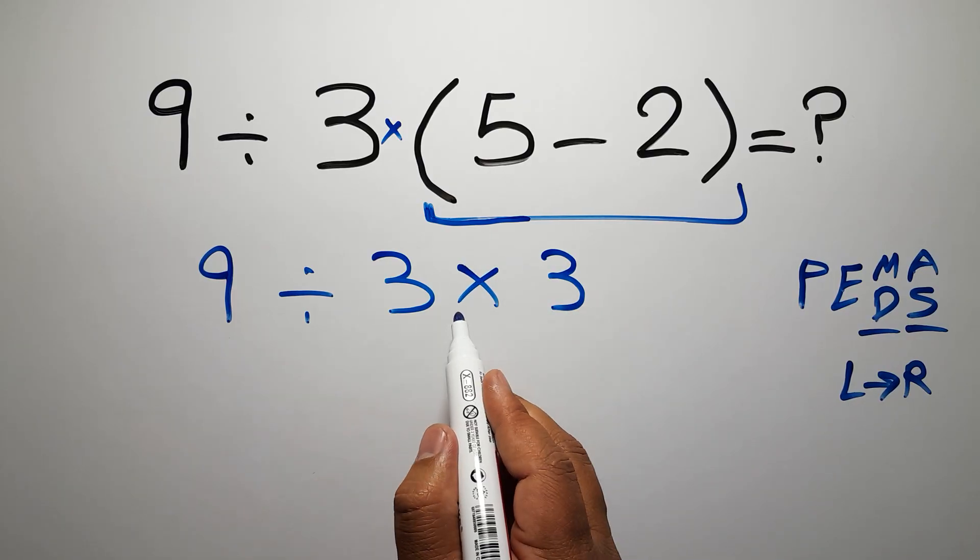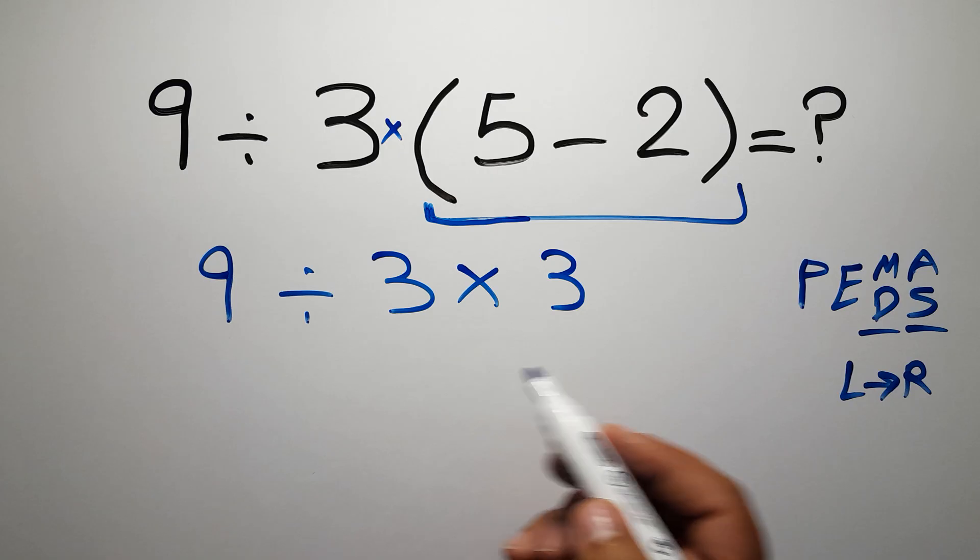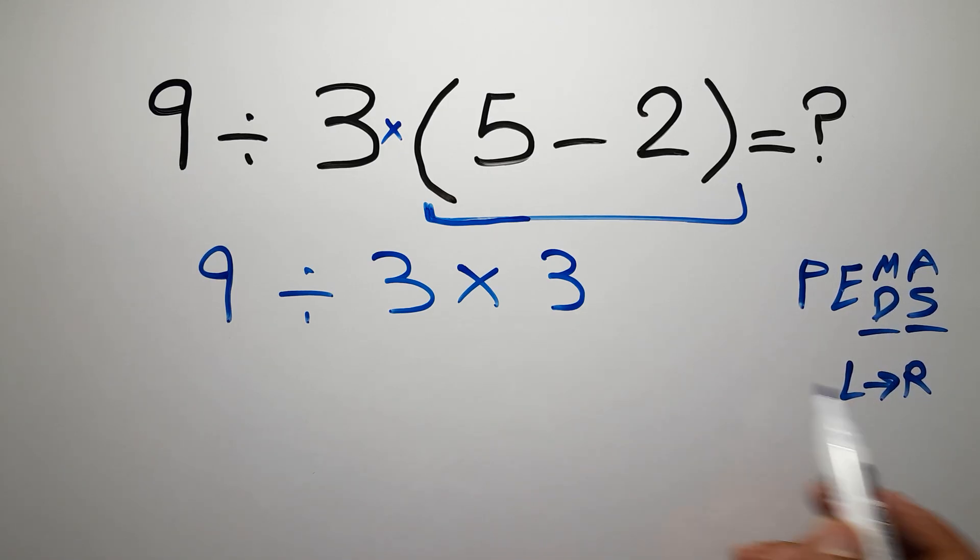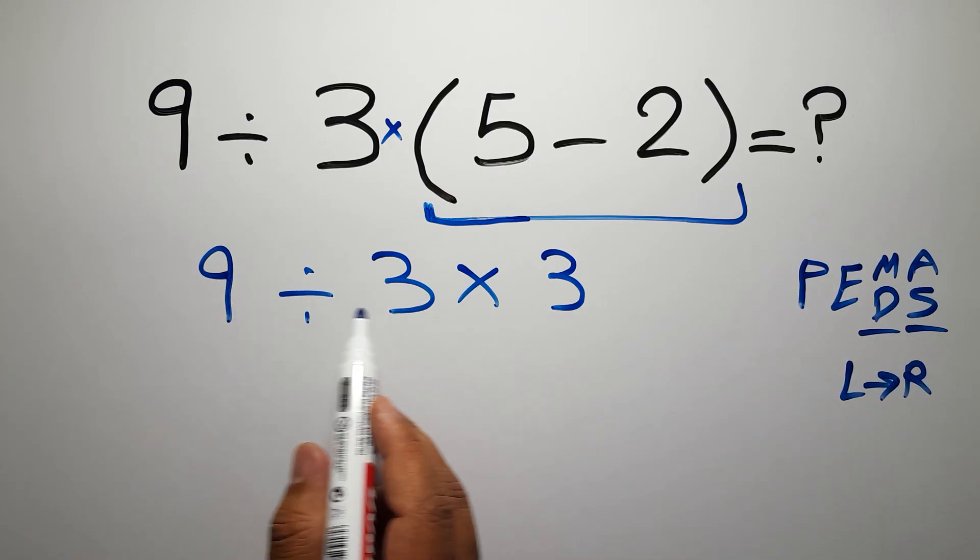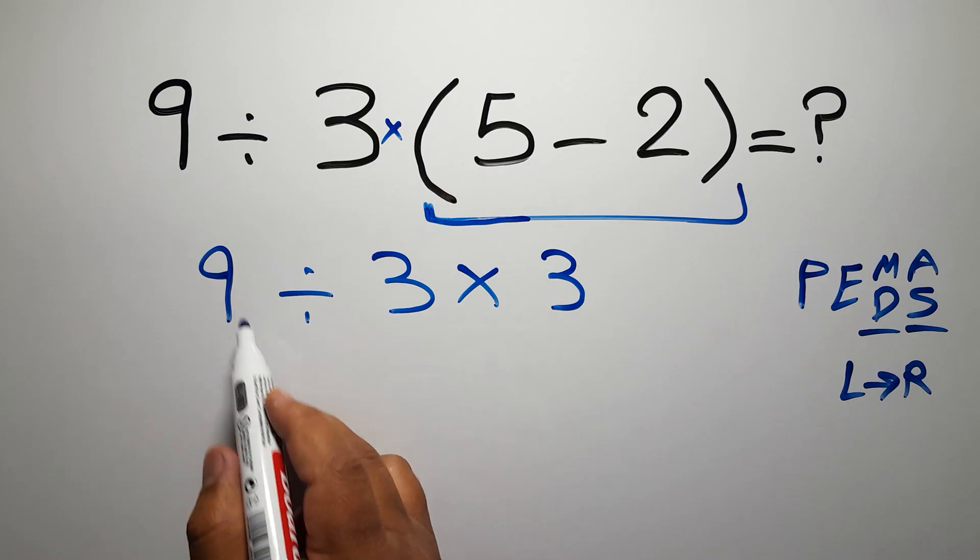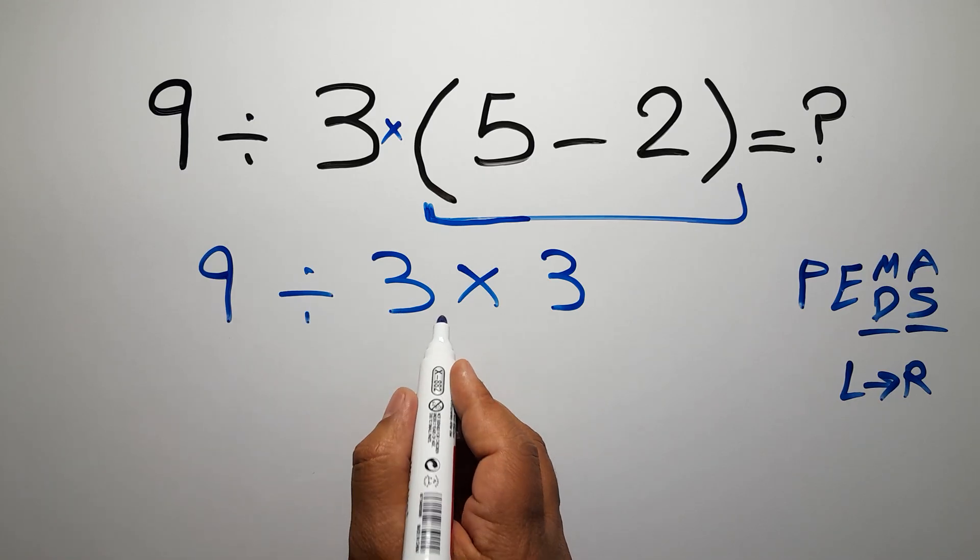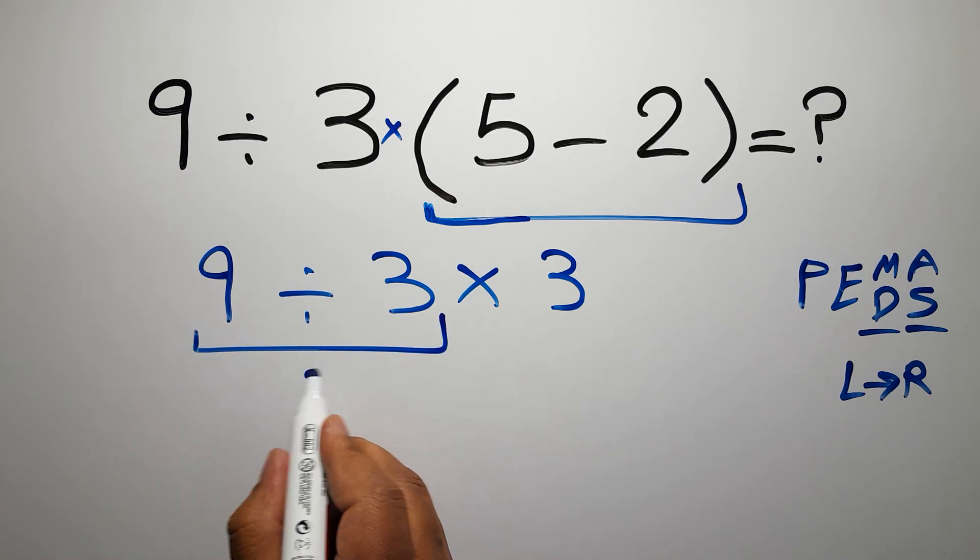Now we have one division and one multiplication. As I said, multiplication and division have equal priority and we have to work from left to right. So here first we have to do this division: 9 divided by 3 gives us 3.